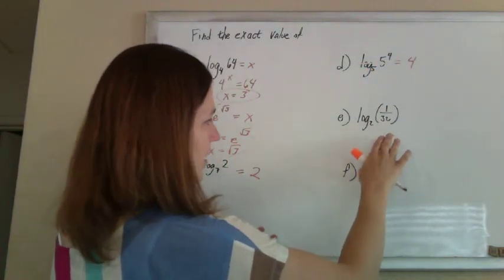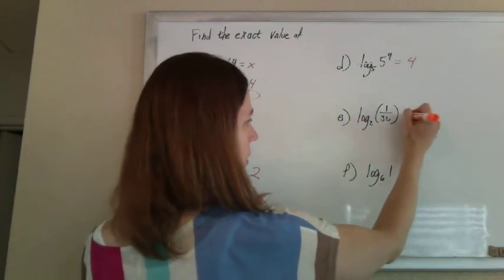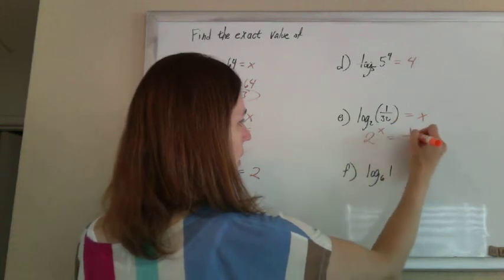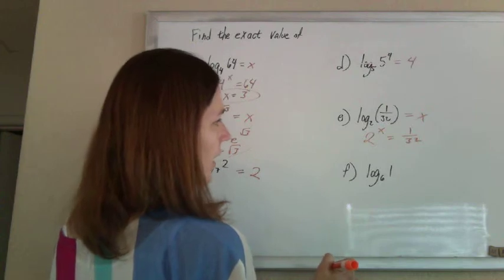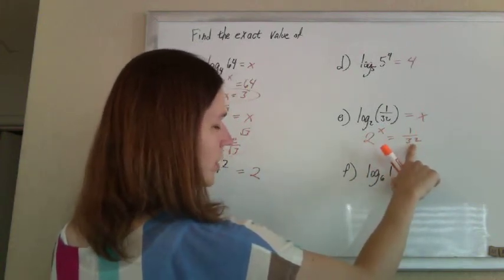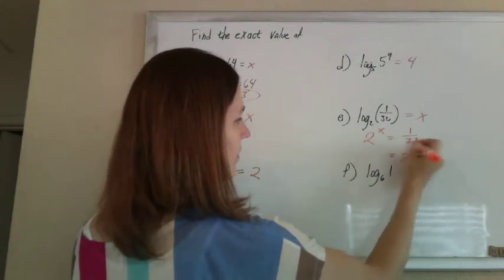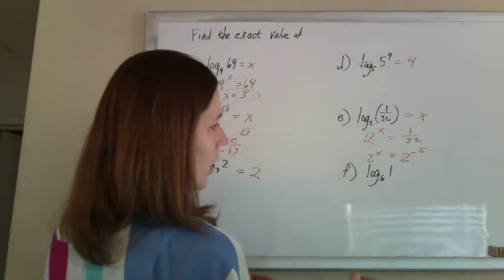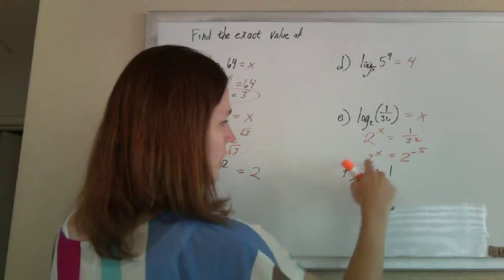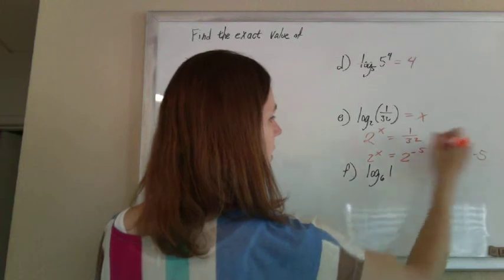This one, not a cancellation property, just like normal. I'm wondering what power I raise 2 to to get 1 over 32. If you write it as an exponential, 2 to some power equals 1 over 32. And I know that 32 is 2 to the 5th. And since it's 1 over 32, that's 2 to the negative 5. So, because a negative exponent will make the reciprocal. So, if 2 to the x equals 2 to the negative 5, then x must be negative 5.